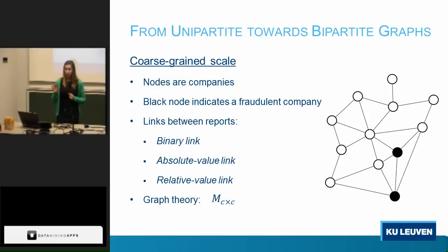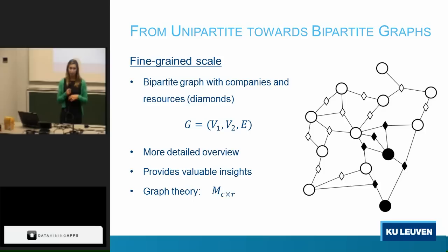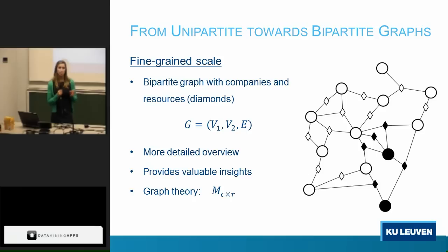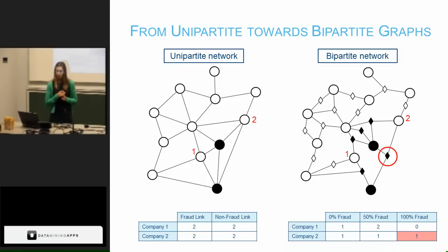What if we want to include additional information, like the resources themselves? Then we include two types of nodes — a bipartite network. Circles represent companies (white for legitimate, black for fraudulent), and diamonds represent resources (white for legitimate, black for fraudulent). This gives a more detailed overview and is represented as a matrix with C rows and R columns, where C is the number of companies and R the number of resources. Is this actually a better representation? Let's prove it. The left network is a unipartite network with one type of node. The right network is a bipartite network with two types of nodes.